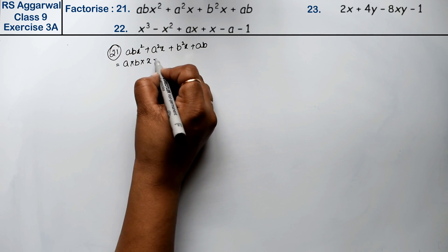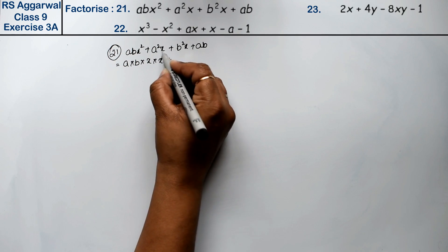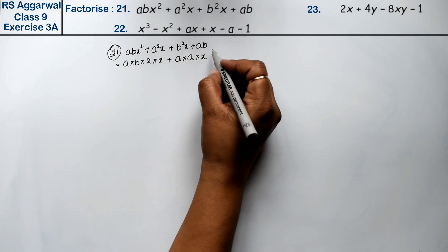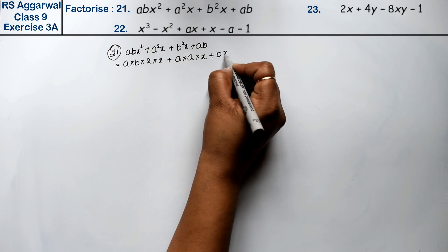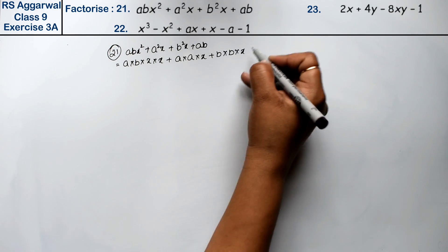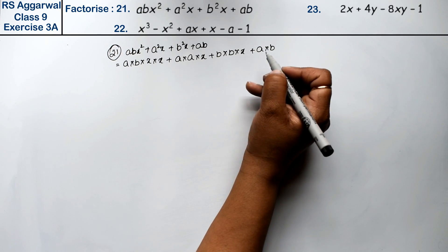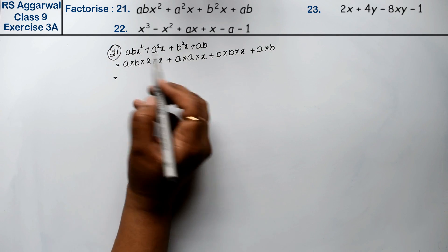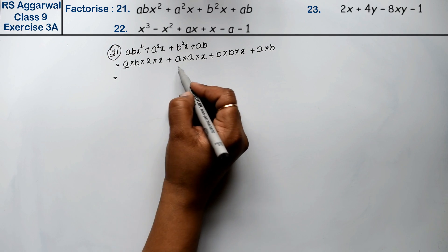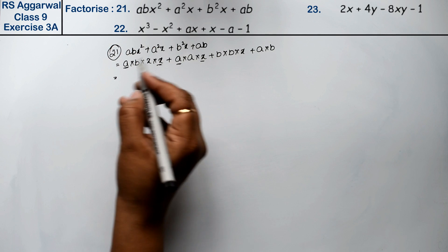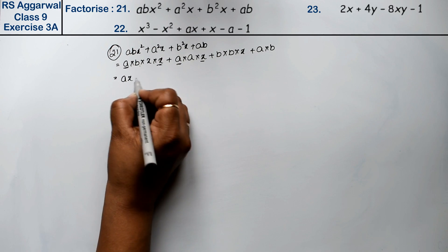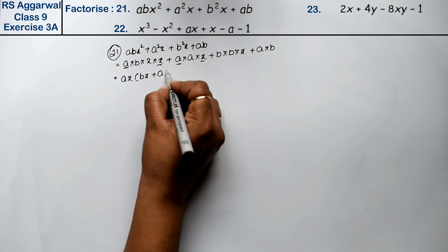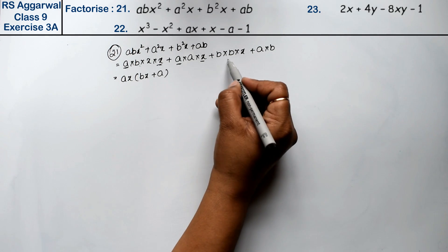We write it as a·b·x·x plus a·a·x plus b·b·x plus a·b. Now if we take ab common from the first and last terms, a is coming out and ax is coming out. So taking ax common, we get bx remaining from the first and a remaining from the second.